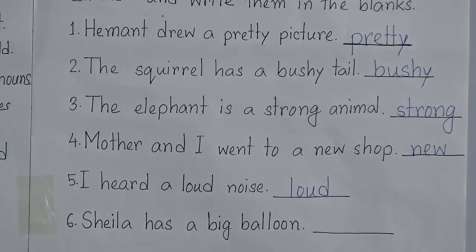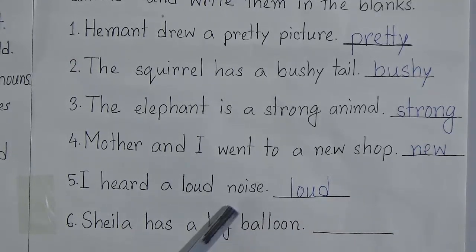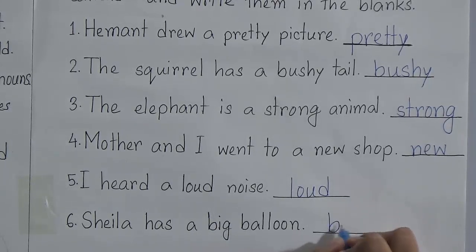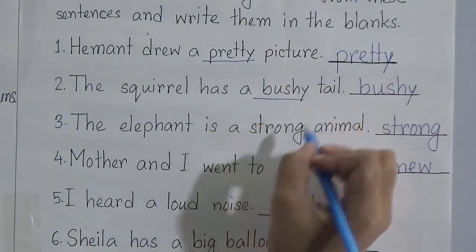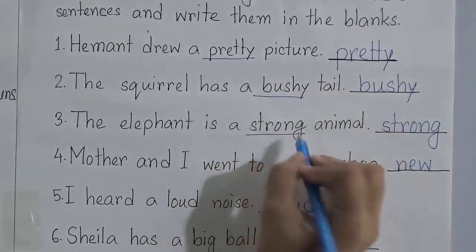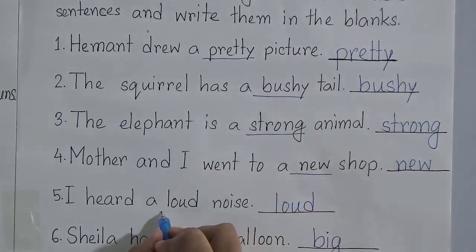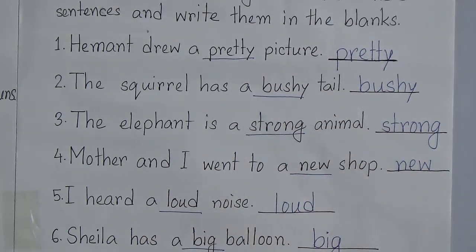Number six: Sheila has a big balloon — how is the balloon? It's big. So we will write here: big. Balloon is the noun, so big describes the noun. Now look at these words: pretty, bushy, strong, new, loud, and big are our describing words.